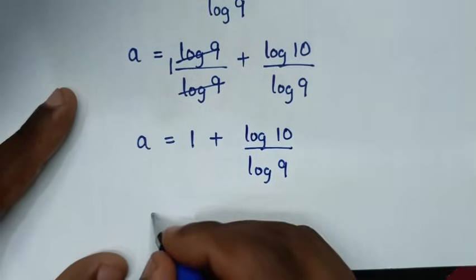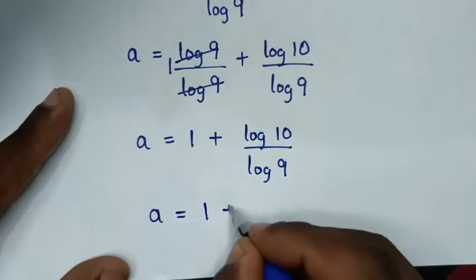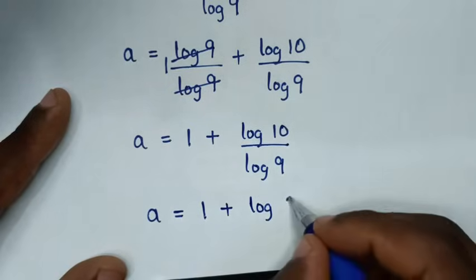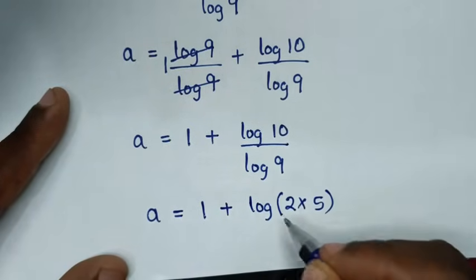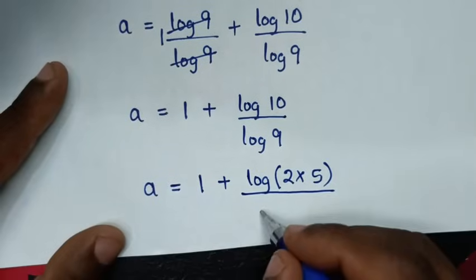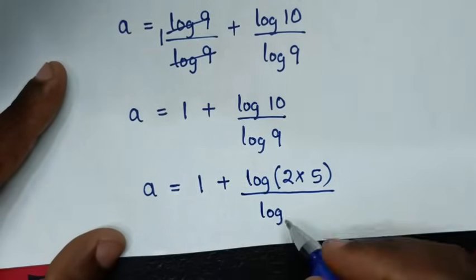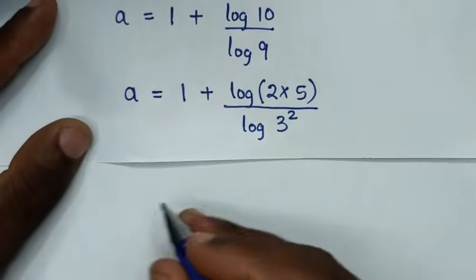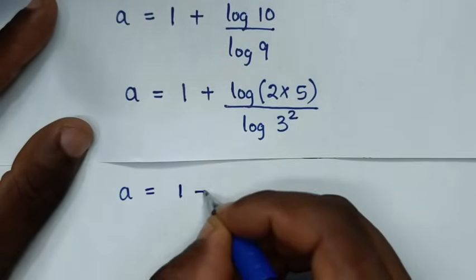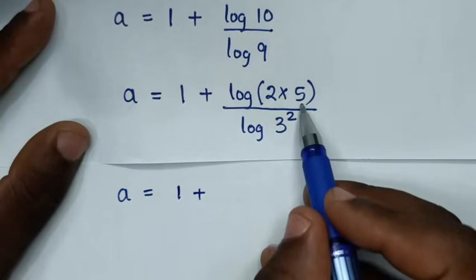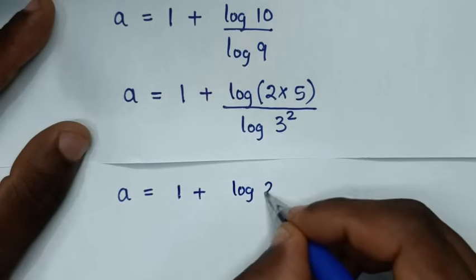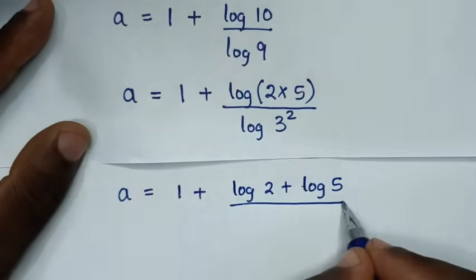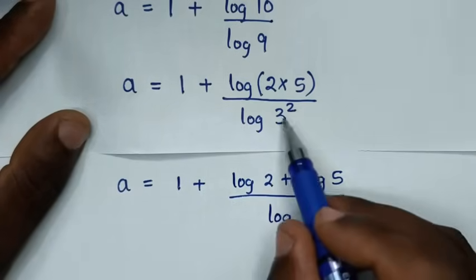Then in the next step, a is equal to 1 plus log of 10 over log of 9. Now 10 is the same as 2 times 5, and 9 is the same as 3 squared. So it becomes 1 plus log of (2 times 5) over log of 3 squared. And log of (2 times 5) is the same as log of 2 plus log of 5.